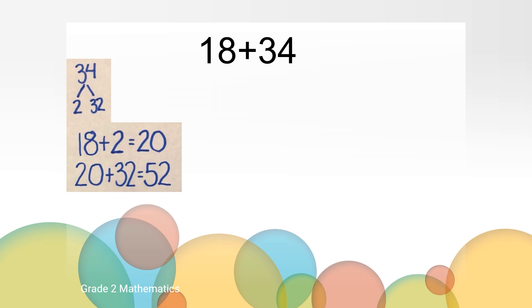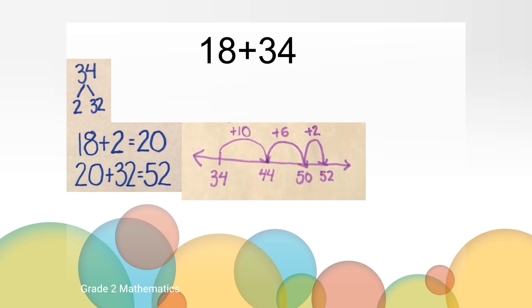Maybe you used the number line as a tool to show your strategy. There are many different ways to make jumps on the number line for this problem. I saw a second grader make jumps like this: they started at 34 and added 10 from the 18 to get 44, then they added 6 more to get to the next friendly number 50. Then there were 2 more left from the 18, so 50 and 2 more is 52. Where do you see the 34 in this student's strategy? That's it — the number they started with on the number line. Where do you see the 18? The numbers that were added, or the value of the jumps, is the 18.